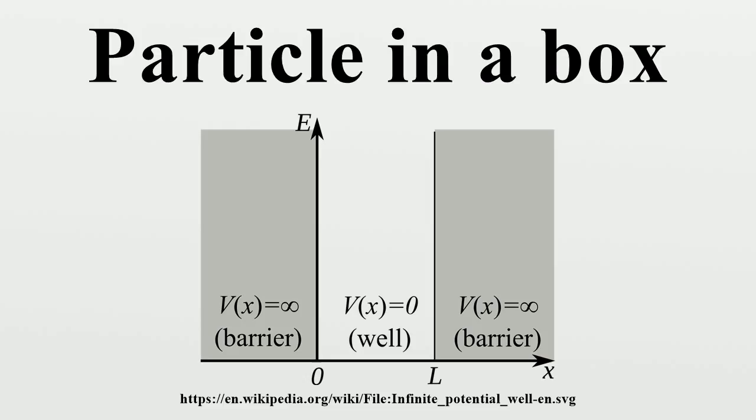This contrasts with classical systems, where the particle can have zero energy by resting motionlessly. This can be explained in terms of the uncertainty principle, which states that the product of the uncertainties in the position and momentum of a particle is limited by ℏ. It can be shown that the uncertainty in the position of the particle is proportional to the width of the box. Thus, the uncertainty in momentum is roughly inversely proportional to the width of the box.